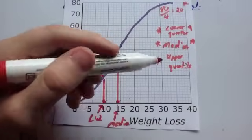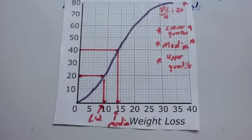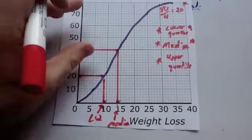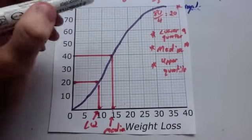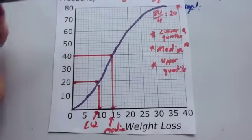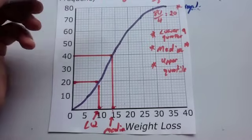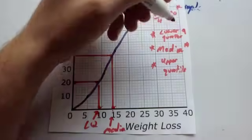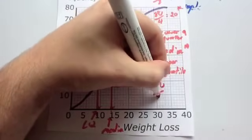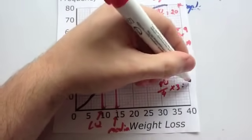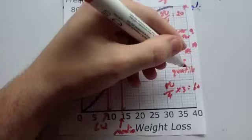Now we're going to find the upper quartile. So that's three quarters of the way through the number, or three quarters of the way through the data, or 75% of the way through the data. There's 80 people. So we're going to find three quarters of 80. So divided by 4 is 20, and times by 3 is 60. So we're going to go for 80 divided by 4 times by 3, which equals 60. So we're looking for the 60th person.